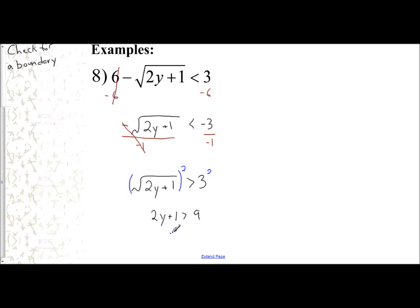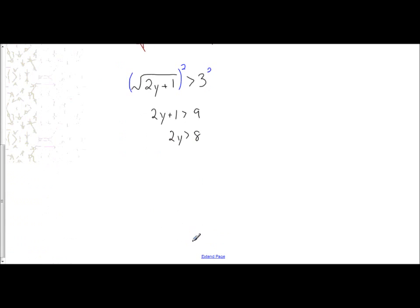I subtract one from both sides to get 2y is greater than eight, then divide by two to get y is greater than four. That is my temporary solution. At this point, I need to check for a boundary.